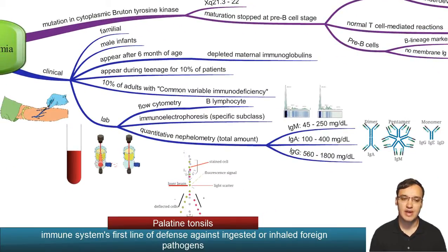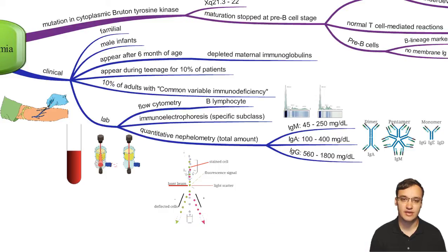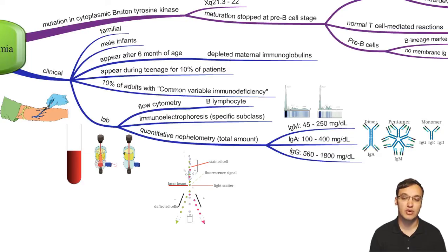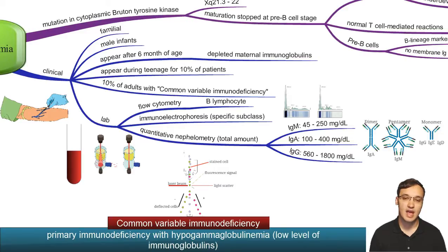Turning to the clinical part: this is a familial, inherited disease mostly affecting male infants after about six months of age. This is because the immunoglobulins transferred from the mother are depleted from the baby by then, and the baby is not producing immunoglobulins himself. Symptoms appear after about six months. About 10% of cases will reach teenage years, and some patients with common variable immunodeficiency will also present with this X-linked agammaglobulinemia.